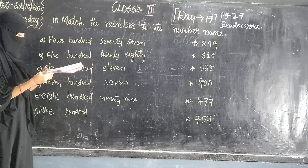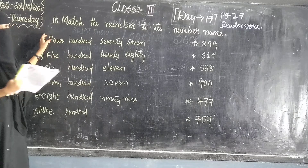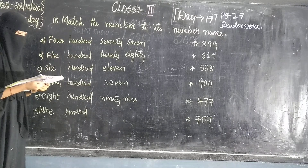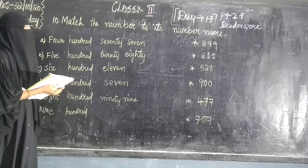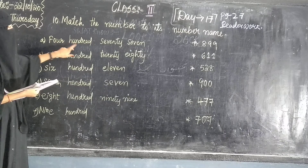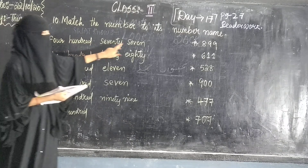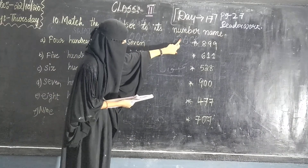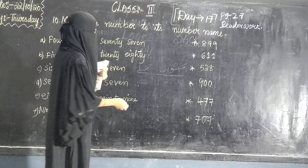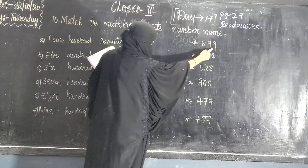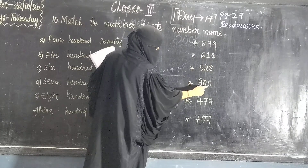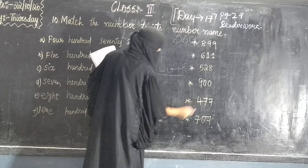Page number 27, question number 10. Abhi ham number name ko figure me convert karenge — match karna hai number 2 is number name. Number name ko apne number ke saath match karna hai. So 477 — check points: 899, 611, 528, 900, 477.